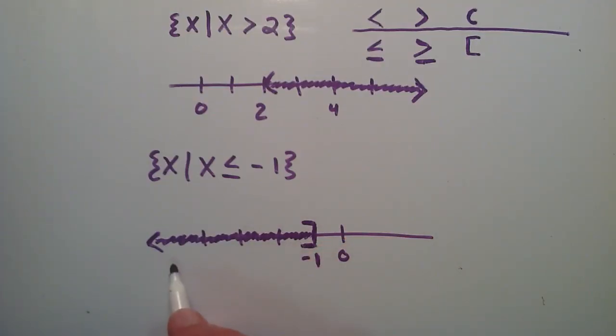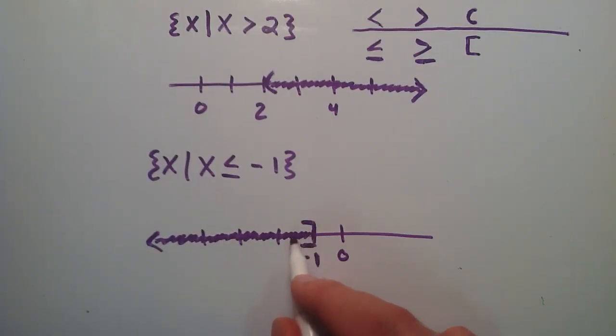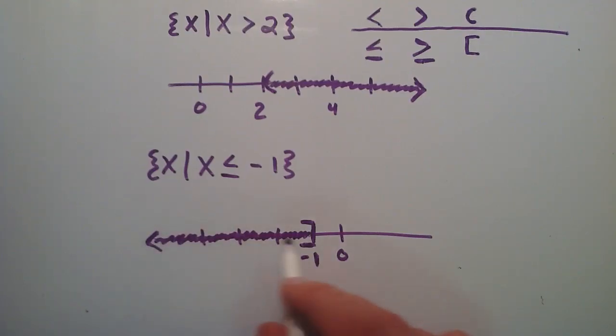So now looking at this graph tells us that our set includes all the numbers that are less than the value negative 1, and also it includes the value negative 1 itself. So less than or equal to the value negative 1 is in this set right here.